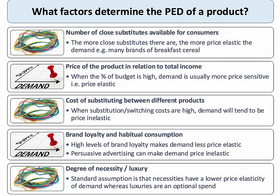Brand loyalty and habitual consumption also affect price elasticity of demand. With habitual consumption, consumers become less sensitive to the price of what they're buying because they're buying it out of habit — effectively it's become the default choice. So strong brand loyalty to a particular product makes demand less elastic.